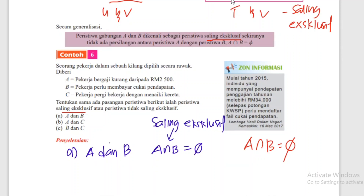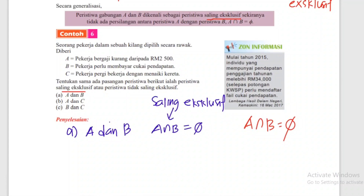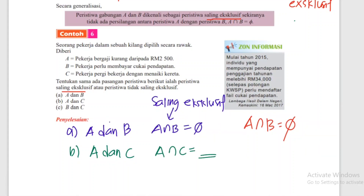Soalan B: A dan C. Gaji kurang daripada RM2,500 dan pekerja pergi bekerja menaiki kereta - ia boleh berlaku bersama. Jadi A dan C ada nilai persilangan - ada kaitan. Maksudnya gaji dia kurang daripada RM2,500 dan dia pergi bekerja menaiki kereta. Kita kata dia tidak saling eksklusif.